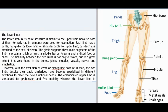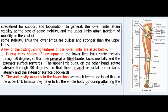The similarity extends to joints, muscles, vessels, nerves, and lymphatics. However, with the evolution of erect or plantigrade posture in man, the two limbs have become specialized in different directions. The upper limb is specialized for prehension and free mobility, whereas the lower limb is specialized for support and locomotion. The lower limbs attain stability at the cost of some mobility, and the upper limbs attain freedom of mobility at the cost of some stability. Thus the lower limbs are bulkier and stronger than the upper limbs.